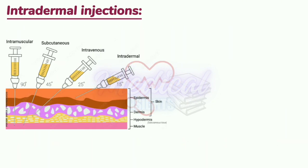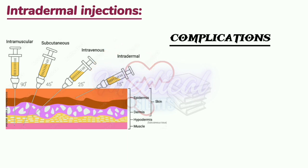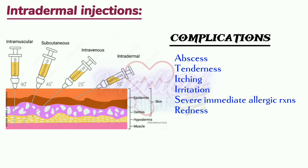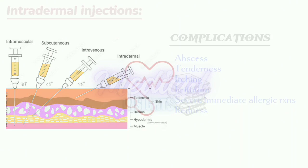The angle of administration for an intradermal injection is 5 to 15 degrees. Complications of intradermal injections include abscess, tenderness, itching, irritation, severe immediate allergic reactions and redness.